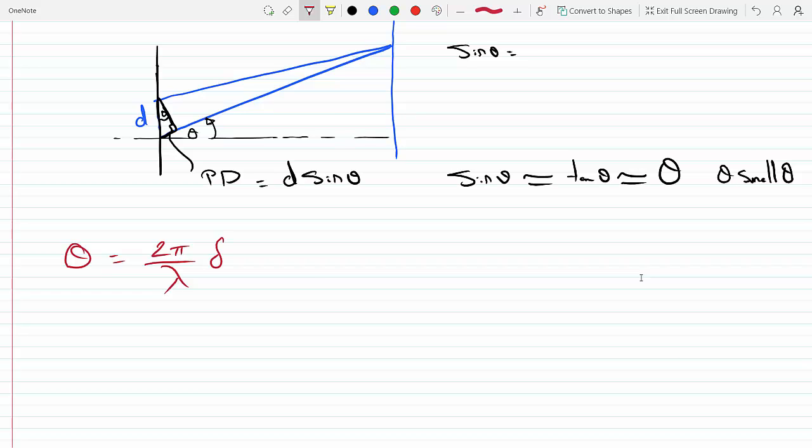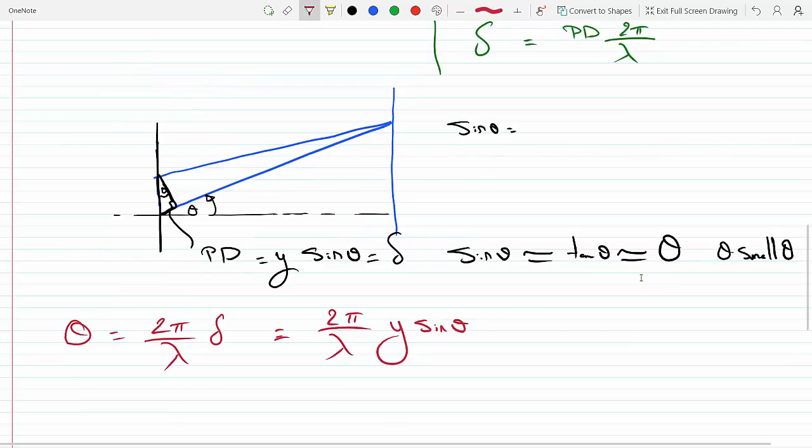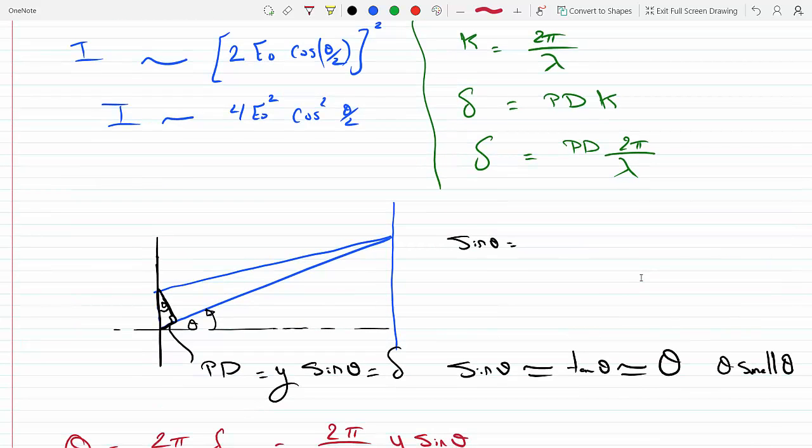And I'm calling this d, let's just call it y, since the question had a y in it. So this here is a y, which is the same thing as gamma. So then this guy becomes two pi over lambda times gamma, which means times y sine theta.